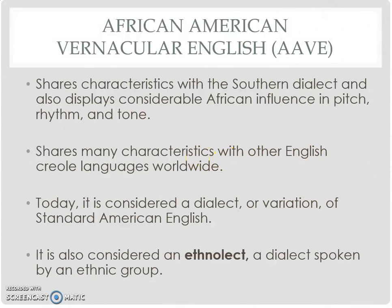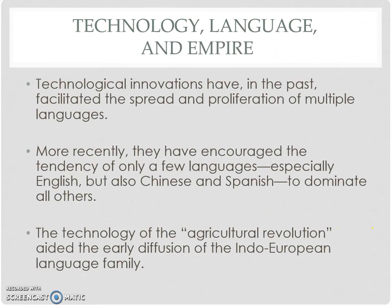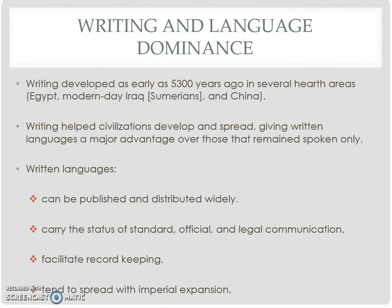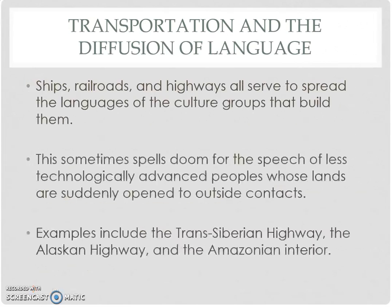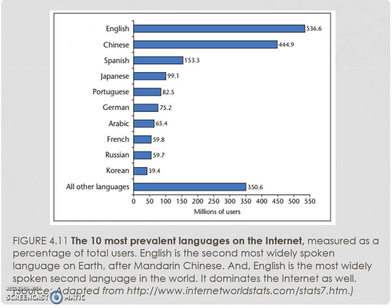A dialect spoken by a specific ethnicity can be called an ethnolect. With globalization, thousands of languages have only 100,000 or 500,000 speakers. Some experts believe 300 languages will be extinct or dying by 2100, largely due to the massive spread of technology. Writing and language spread through transportation and diffusion — not just technology, but physical transportation and the internet.